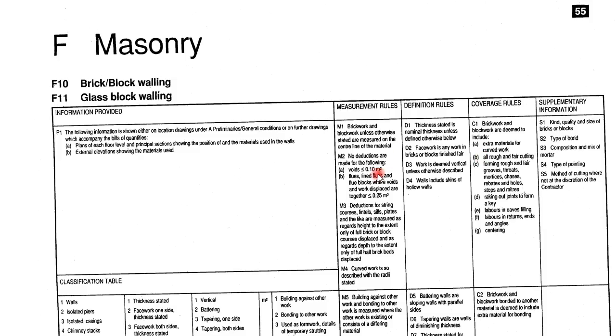For the measurement rules, whenever you are measuring — like in our case — we are using the center line of the drawing. That's why we had to do some adjustments. Otherwise, if we were using the external dimensions, the adjustments wouldn't have been necessary. The measurement rule M1 gives us an idea how we can conduct our measurement: brickwork and blockwork, unless otherwise stated, are measured on the center line of the material. That rule gives us a basis for measuring any brickwork or blockwork we might have been given.